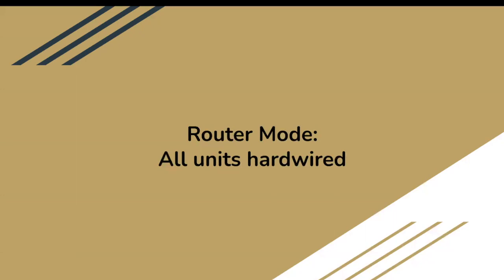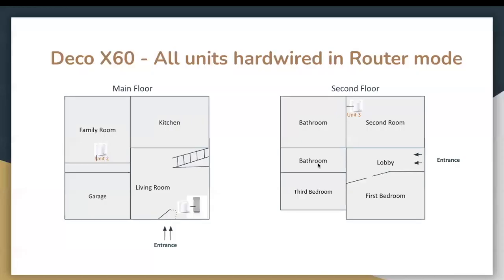Next I moved into router mode with all units hardwired. I noticed that within my walls there were RJ45 ports with Cat5e cable running throughout the house, so I adjusted the unit placements to align with those ethernet port locations. The main unit stayed in place, Unit 2 was placed in the family room where there was an ethernet port, and Unit 3 was on the second floor with another ethernet port. All ethernet cables from Unit 2 and Unit 3 ran down to the basement where they connected through a switch, then back up to the Rogers modem.